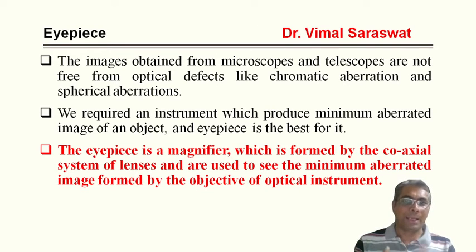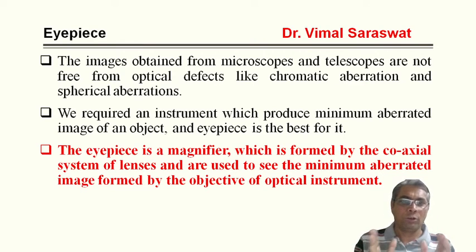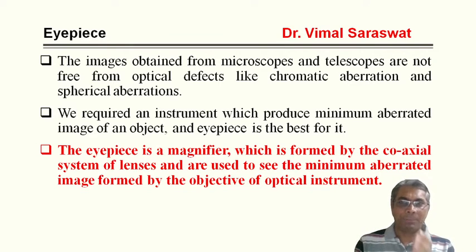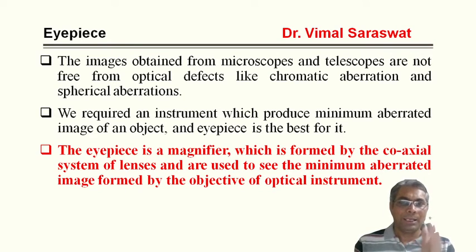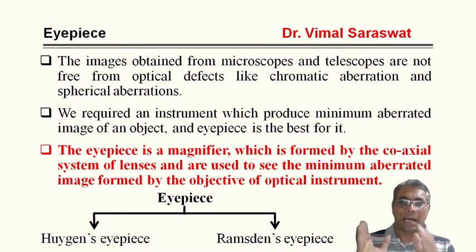The eyepiece is a magnifier which is formed by the coaxial system of lenses and is used to see the minimum aberrated image formed by the objective of an optical instrument. There are two types of eyepiece: one is Huygens eyepiece and another one is Ramsden eyepiece.